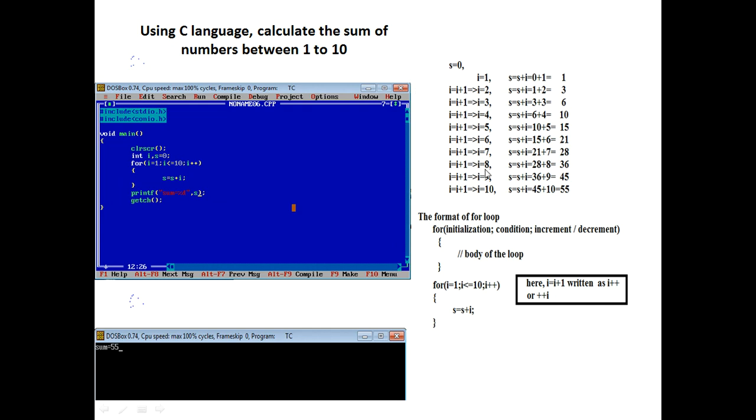This is a simple calculation. You see that we take the primary value of s equal to 0, then I take the initial value equal to i equal to 1. Then I write a simple expression: s equal to s plus i. That is 0 plus 1 equal to 1. Then value of i is incremented by 1. That is i equal to 2.